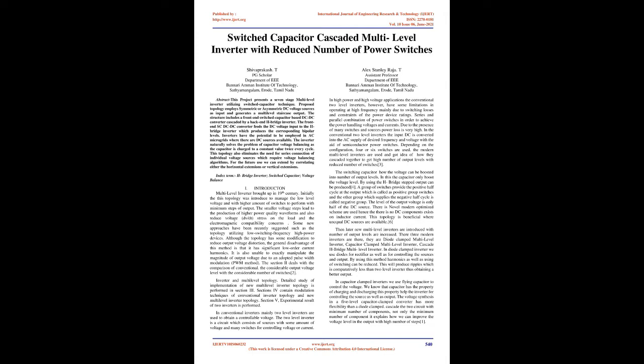The smaller voltage steps lead to the production of higher power quality waveforms and also reduce voltage dV/dT stress on the load and electromagnetic compatibility concerns. Some new approaches have been recently suggested, such as the topology utilizing low-switching frequency high-power devices. Although the topology has some modification to reduce output voltage distortion, the general disadvantage is significant low-order current harmonics, and it is unable to exactly manipulate the magnitude of output voltage due to the adopted PWM method.